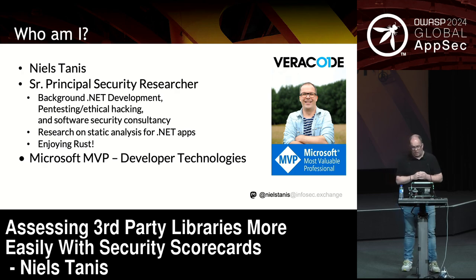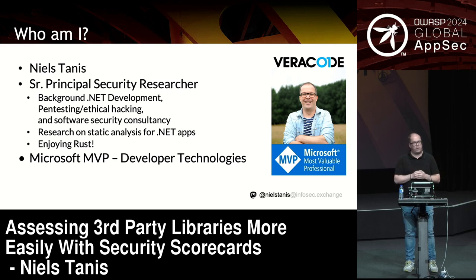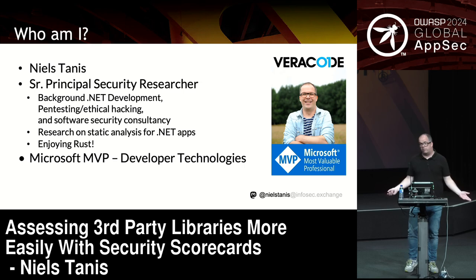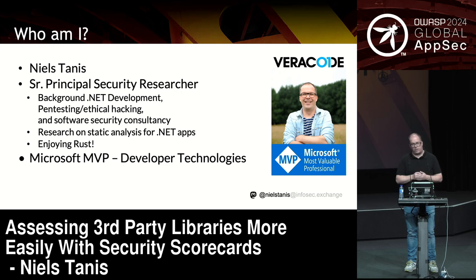My name is Neil Stanish. I work as a security researcher for Veracode, and I've got a background in .NET development. I've been doing .NET development since the early 2000s with the first versions, but always was infected by application security. In 2015 I joined Veracode. Right now I focus mostly on static analysis, mostly .NET. I'm also enjoying Rust lately, and I do a lot of public speaking. I'm also a developer technologies MVP for Microsoft.